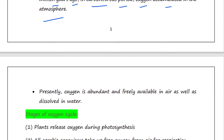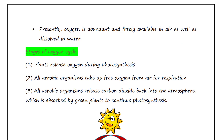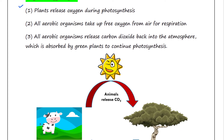Presently, oxygen is abundant in our atmosphere and it is freely available in air, as well as dissolved in water. The first stage of the oxygen cycle is that plants release oxygen during photosynthesis.